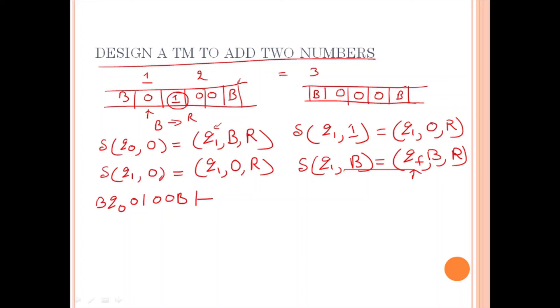So, first move, q0, 0, you have to move rightwards. State will change to q1 and blank will be written. So, blank, q1, 1, 0, 0, blank.